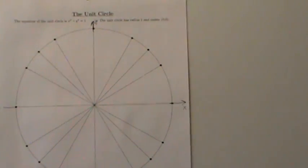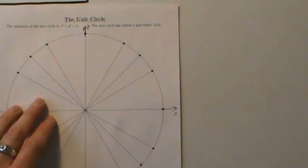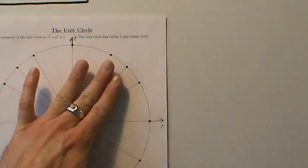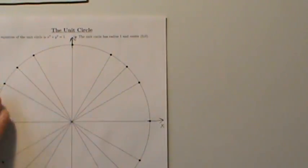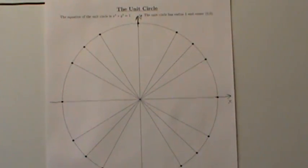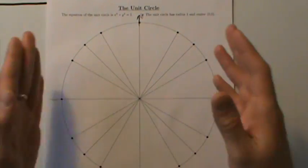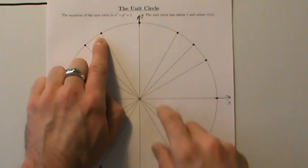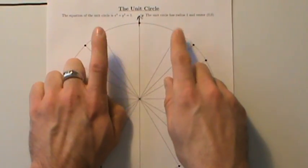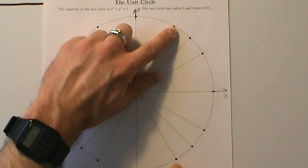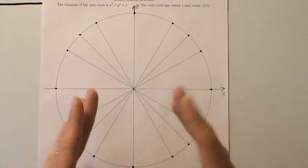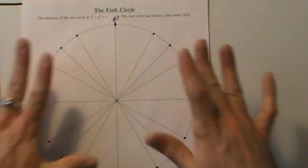What if you don't have it memorized, or what if you're having trouble memorizing it? We'll talk about some tricks for that too. What's nice about the unit circle is it has a lot of symmetry. Like this point and this point — they're reflections of each other over the y-axis. And this point and this point are reflections over the x-axis. We're going to use these symmetry properties to fill in the rest of the circle.